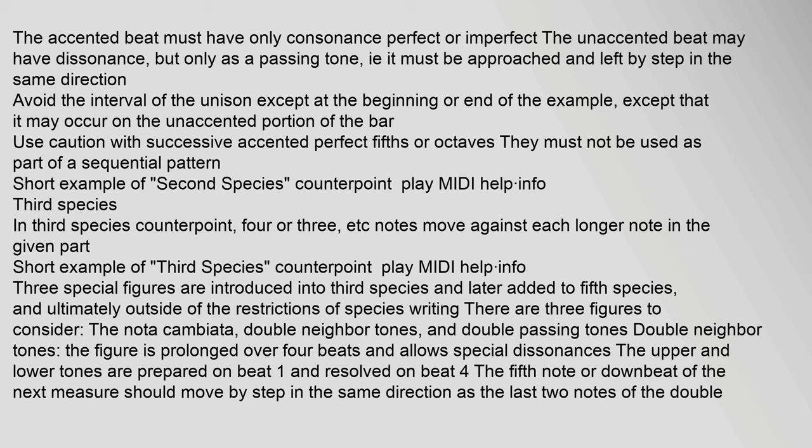The accented beat must have only consonances — perfect or imperfect. The unaccented beat may have dissonance, but only as a passing tone; that is, it must be approached and left by step in the same direction. Avoid the interval of the unison except at the beginning or end of the example, except that it may occur on the unaccented portion of the bar. Use caution with successive accented perfect fifths or octaves; they must not be used as part of a sequential pattern. Short example of second species counterpoint.